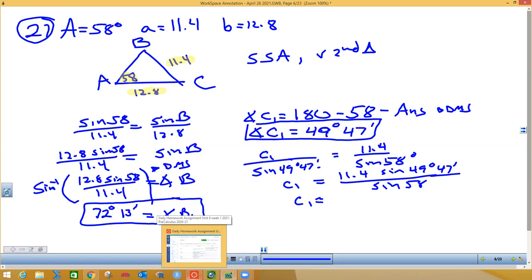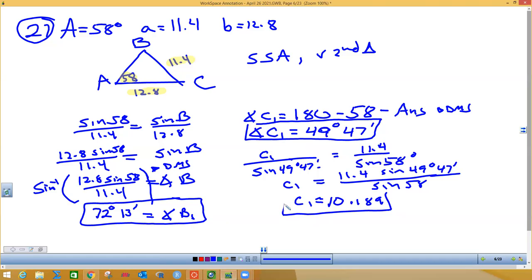What is side c1 going to be to three decimals? This should be the smallest side, right? Because 72 is the biggest angle, so 12.8 is the biggest side. 58 is bigger than that, so this is the middle one, and this should be the smallest. What is c1? 10.189. All right, so the first triangle is done.